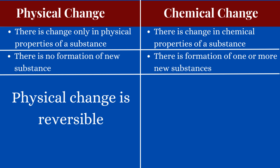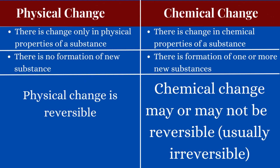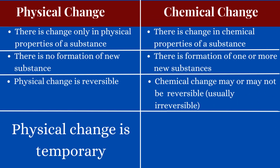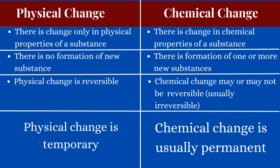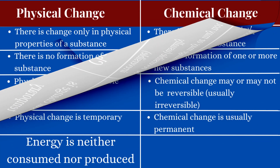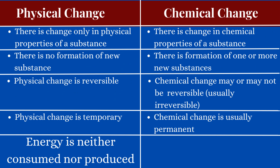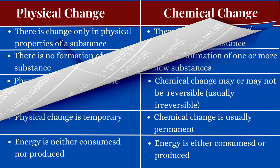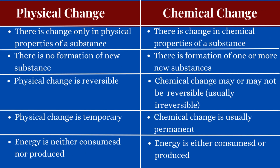Physical change is reversible while chemical change may or may not be reversible. Physical change is a temporary change while chemical change is usually permanent. In physical change energy is neither consumed nor produced, but in chemical change, in most cases, energy is either consumed or produced.